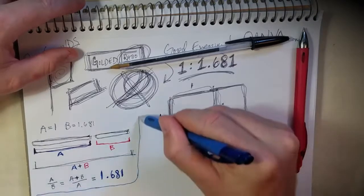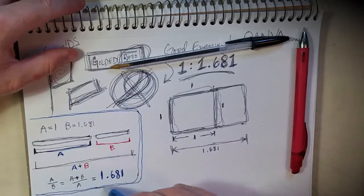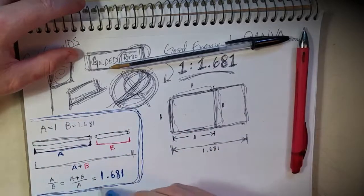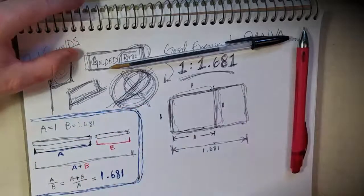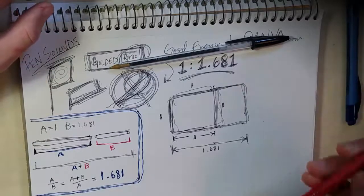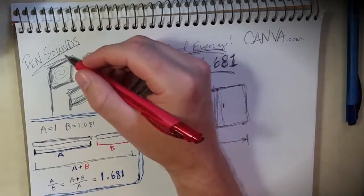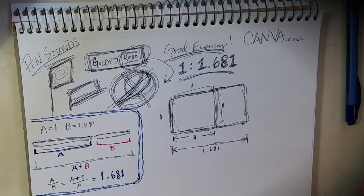The significance of this is that the ratio of A over B is equal to the ratio of A plus B over A, and that equals 1.681. You might still be asking what significance this is — the answer is that it appears in nature a lot.